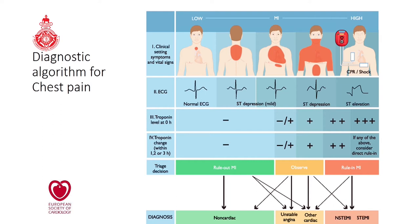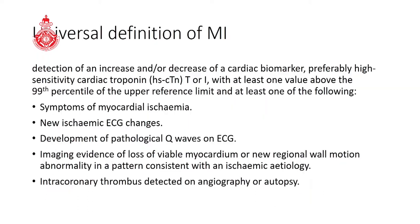Even aortic dissection and pulmonary embolism can present similarly. If a patient has localized non-cardiac chest pain, non-specific ECG changes, and troponin negativity, you can categorize them as rule-out myocardial infarction or unstable angina. The universal definition of myocardial infarction requires a troponin rise along with at least one of: symptoms of myocardial ischemia, new ischemic ECG changes, development of pathological Q waves, imaging evidence, or thrombus interaction at angiography or autopsy.